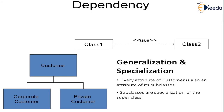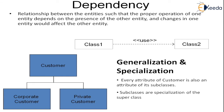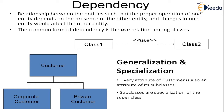We come to the next relation: dependency. In a dependency relationship between entities, the proper operation of one entity depends on the presence of the other entity, and changes in one entity would affect the other. It is normally denoted by 'uses' — when one class uses another class, we say they have a dependency relationship. Subclasses are specialized superclasses; every attribute of a customer is also an attribute of its subclass. The common form of dependency is the use relation among classes.